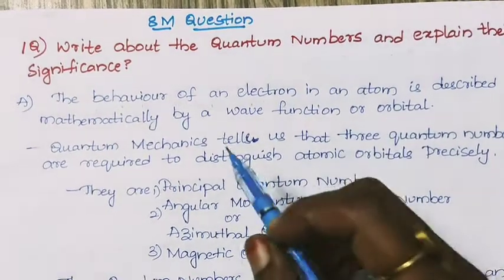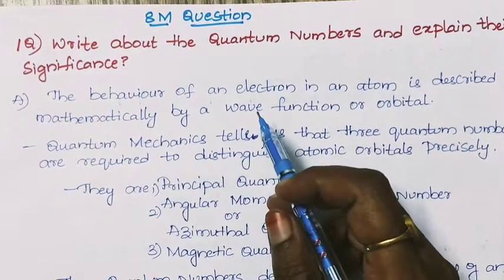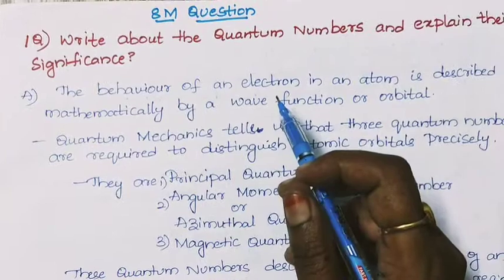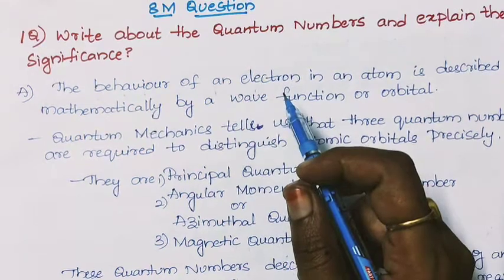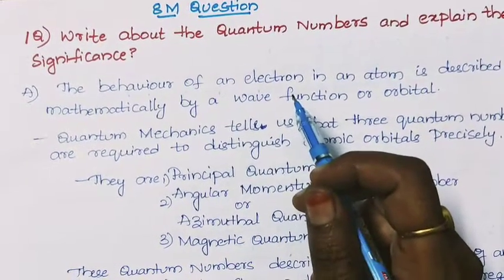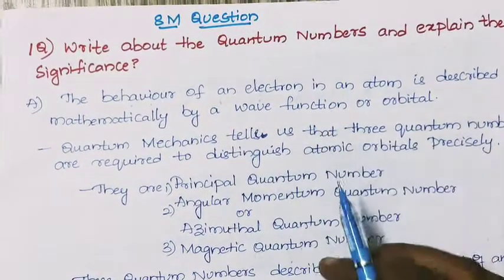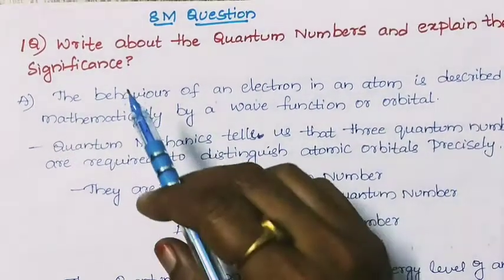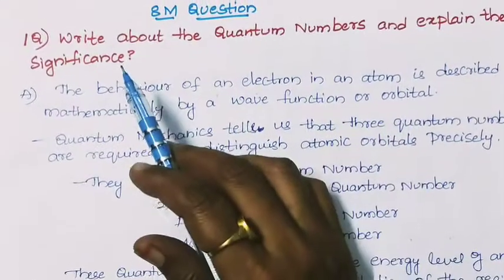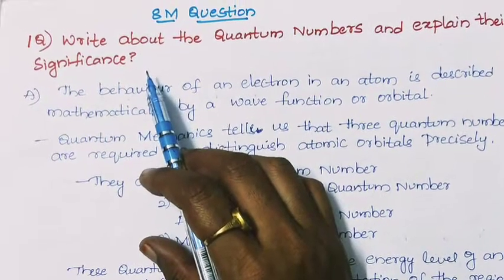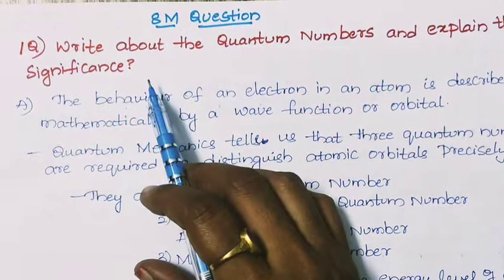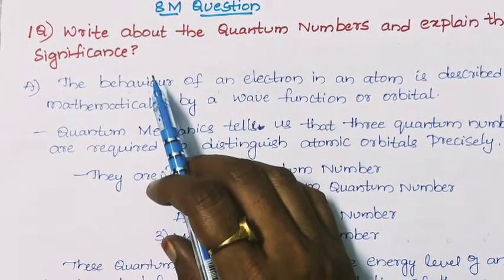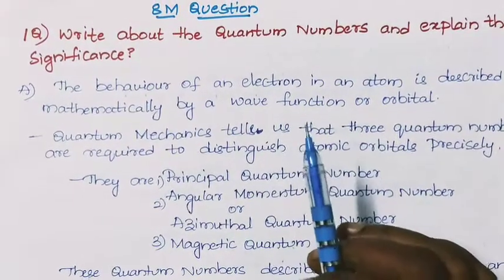Hello students, here are some of the important questions for the IPE exam which is going to be held in October, from the 25th of this month. I have discussed a few important questions — they are very, very important. Here is a brief explanation about the question. From the atomic structure chapter 1, the very important question of 8 marks is: write about the quantum numbers and explain their significance.